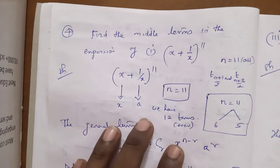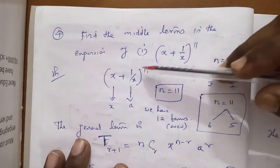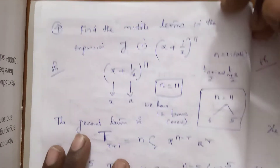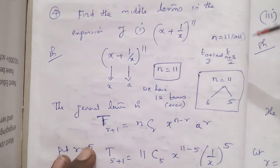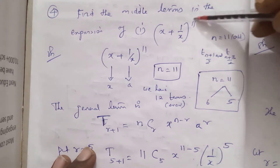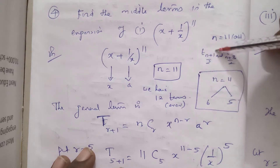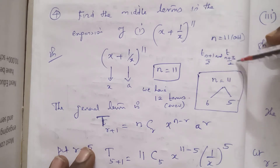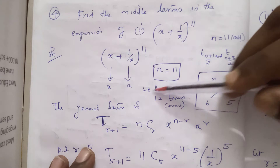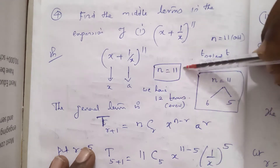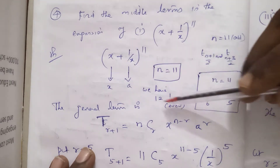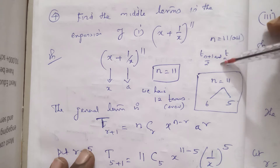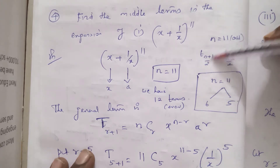Problem number 4: find the middle term of the expansion of (x + 1/x)^11. For the middle term, the number of terms is 11 plus 1 = 12. Since 12 is even, we apply the formula for two middle terms: T(n+1)/2 and T(n+3)/2.